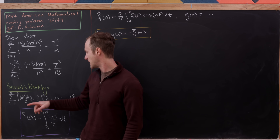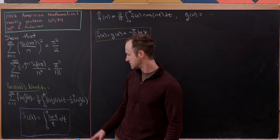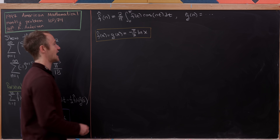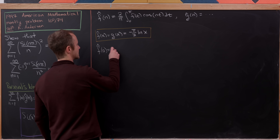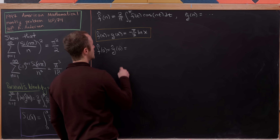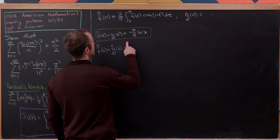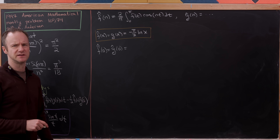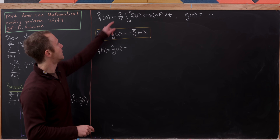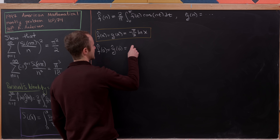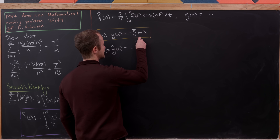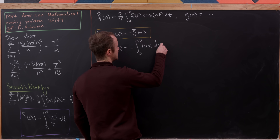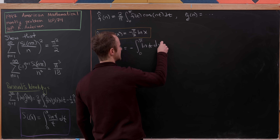We need to develop f̂(n) and ĝ(n) — those are the same thing — and f̂(0) and ĝ(0). Let's look at f̂(0) first. f̂(0), which equals ĝ(0), will be 2/π times the integral — but the 2/π and the π/2 cancel leaving a minus sign. So we'll have minus the integral from 0 to π of the natural log of t dt.